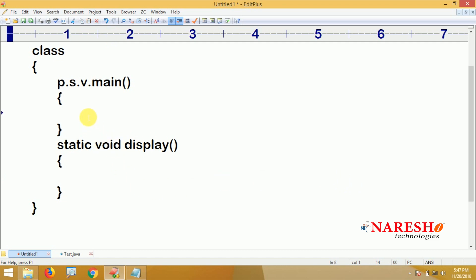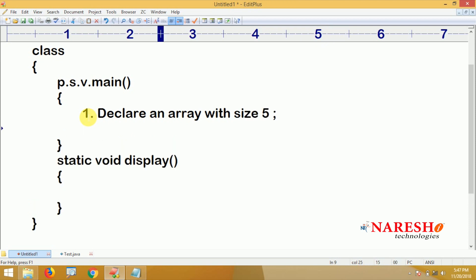Simple. In the main method, first declare an array with size 5. And next, read all the elements. What type of array? An integer array. An integer array with size 5, and read the elements using Scanner class.